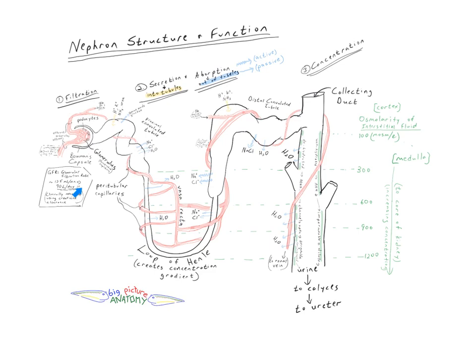There's then a series of secretions and absorptions — secretions into the tubules from the surrounding fluid fed by capillaries, and absorption out of the tubules and into the capillaries — in both the proximal convoluted tubule and the distal convoluted tubule, regulating the content of urea, hydrogen ions, potassium ions, sodium and chlorine ions in the filtrate, and of course the volume of water. This also allows the loop of Henle to create a concentration gradient from the outer cortex of the kidney down into the core.